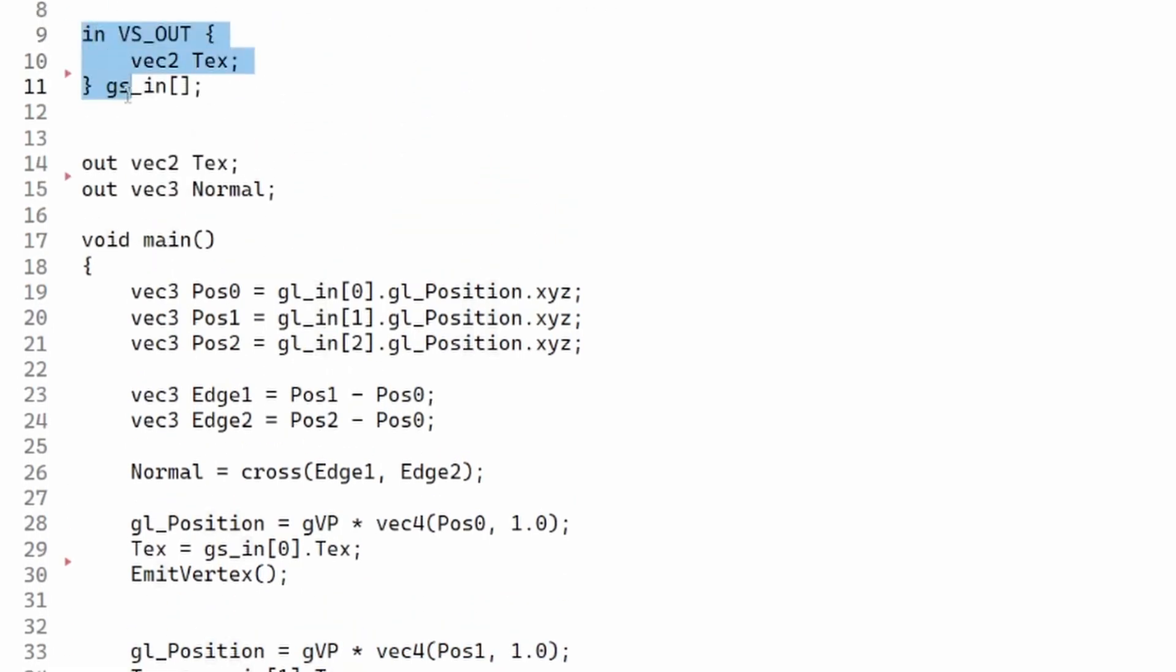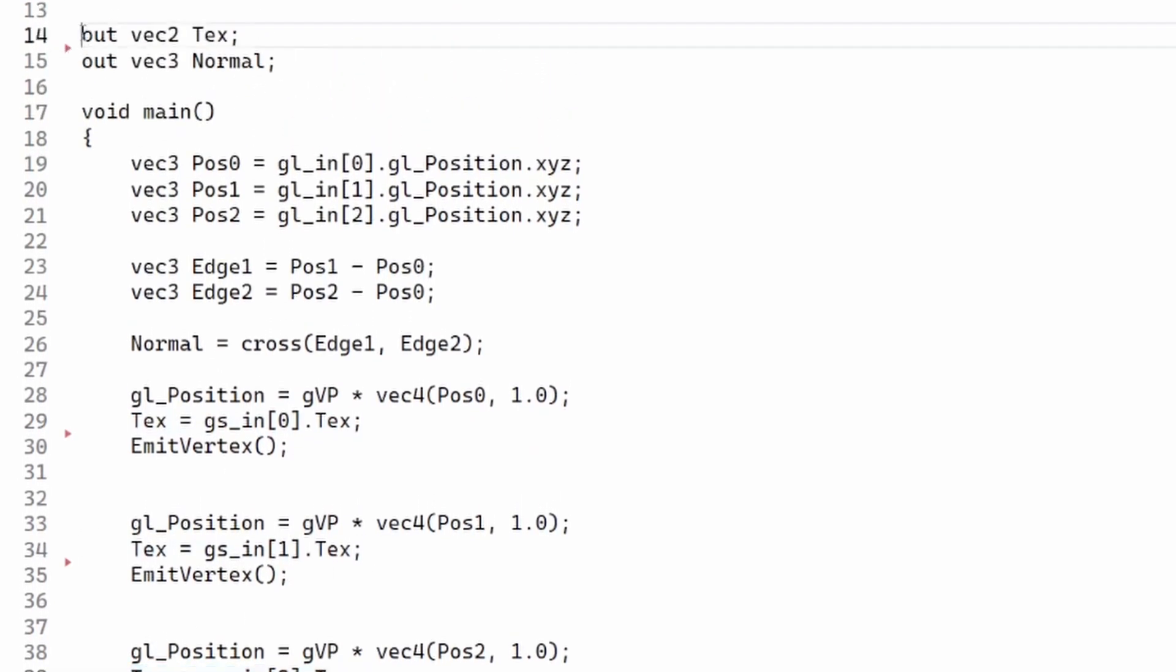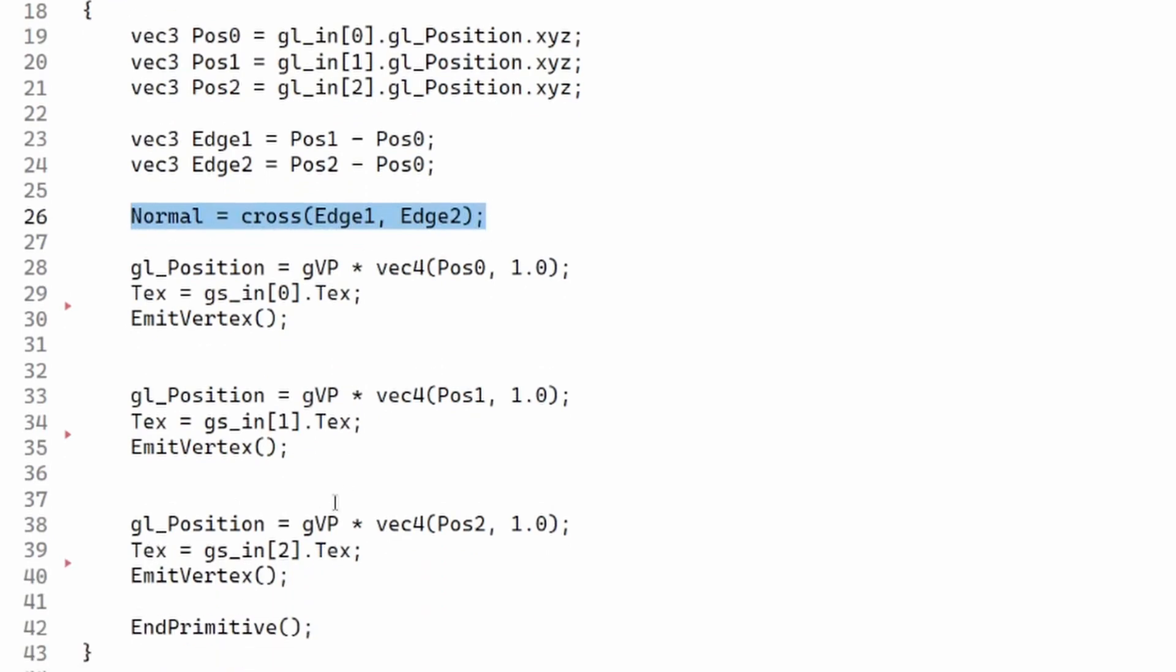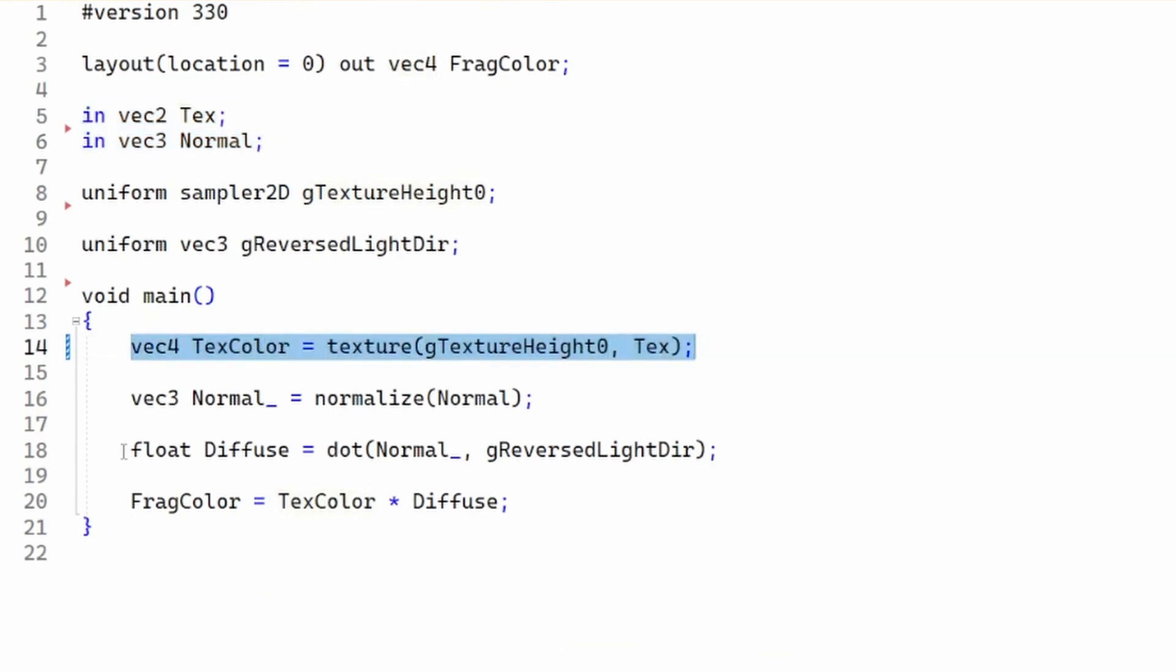We have a declaration of an input interface block which corresponds to the output interface block from the vertex shader. For each output vertex, we copy the texture coordinates from the input to the output. Notice that the normal is the same for all vertices, so it's enough to update it only once. After emitting the three vertices, we have to call EndPrimitive to indicate that we have completed a single output primitive. From now on, everything continues as usual. The fragment shader receives the texture coordinates and the normal vector and uses them to sample from the texture and calculate the diffuse lighting.